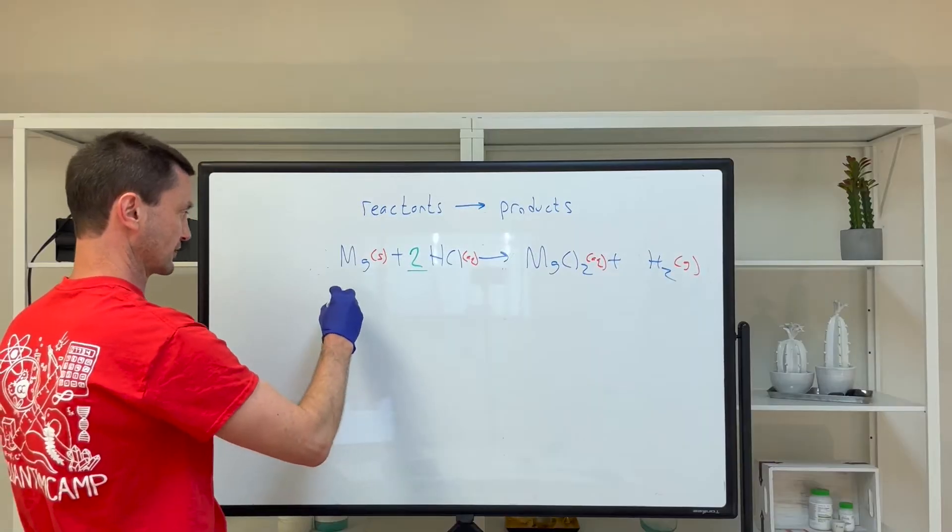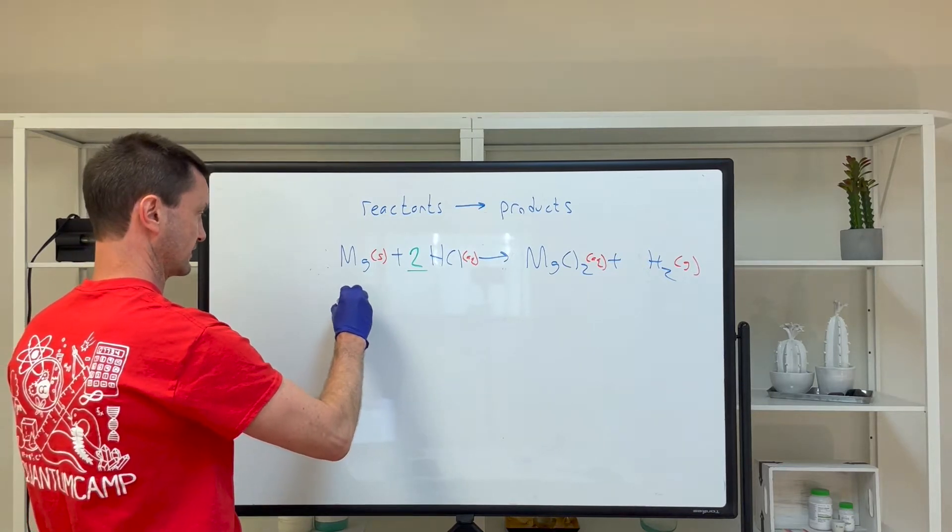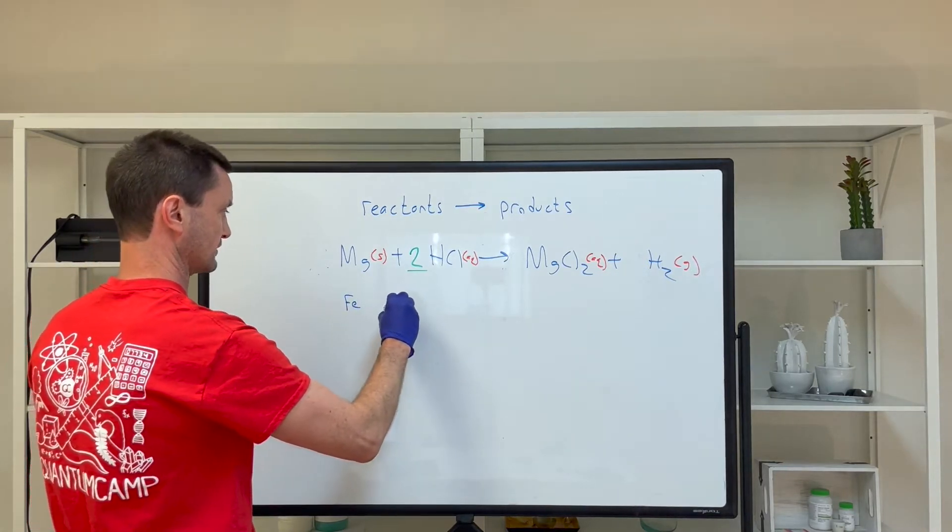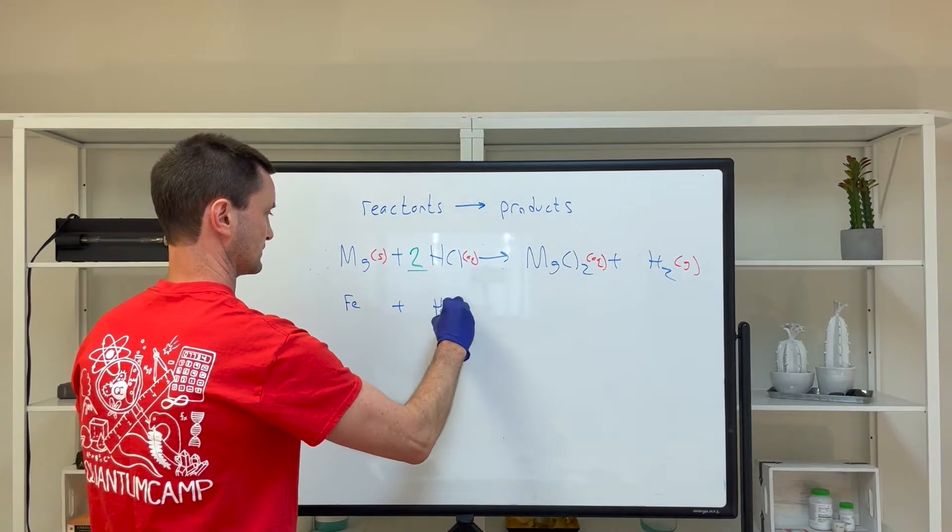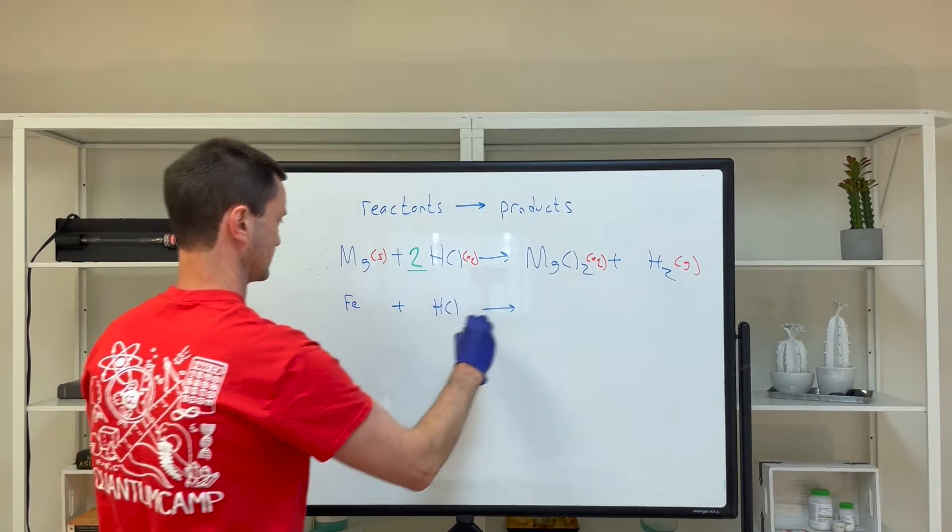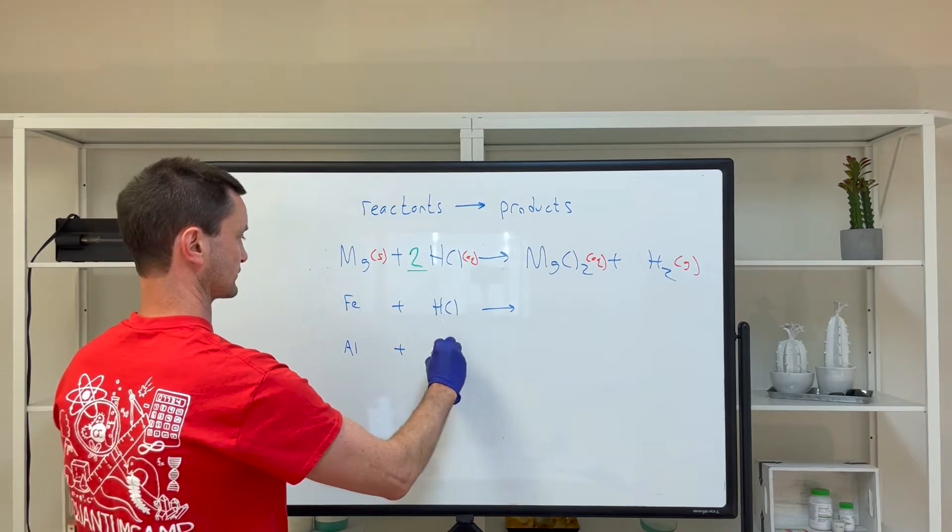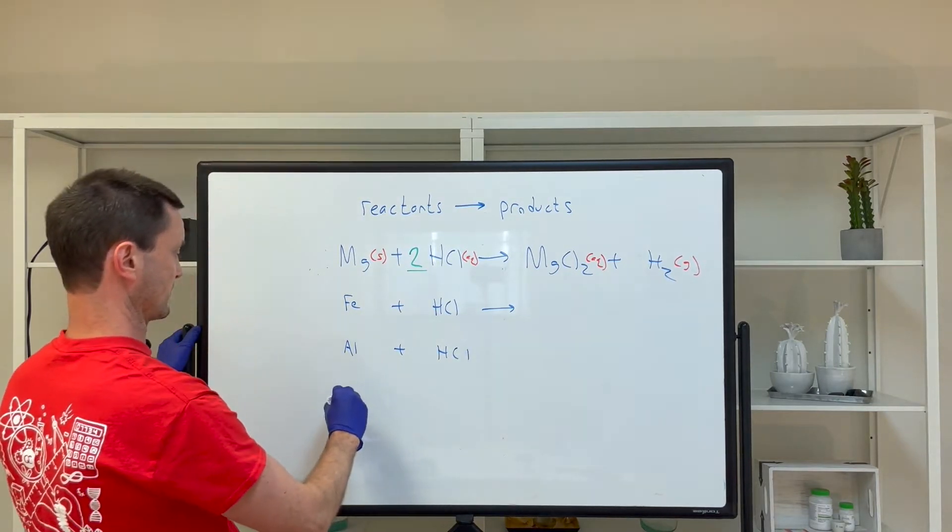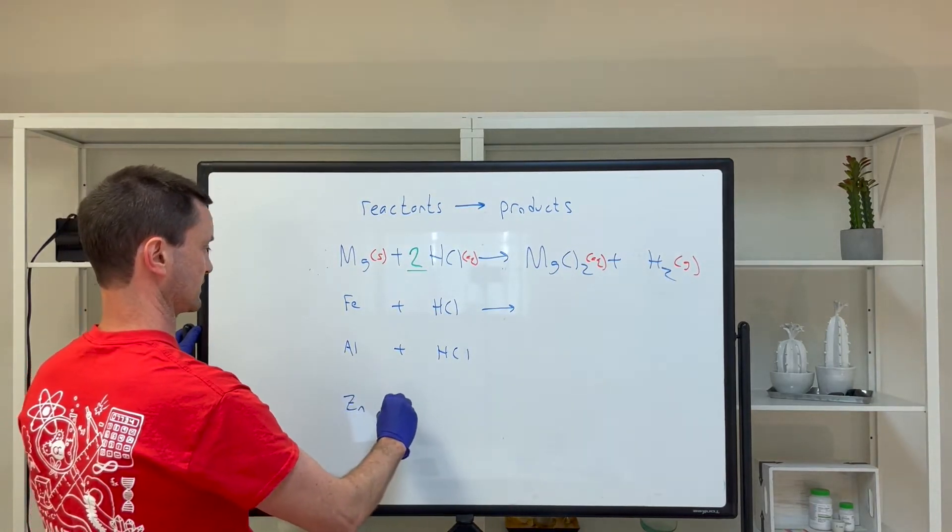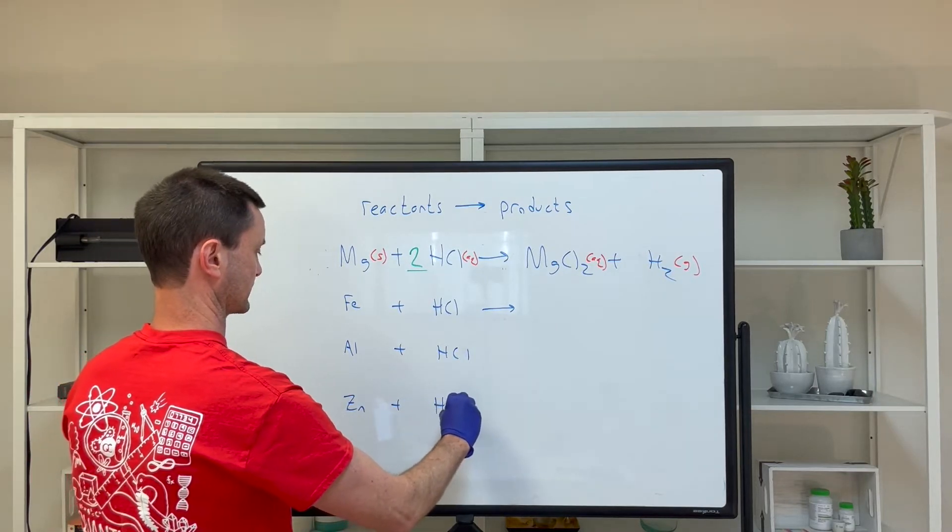Let's write down the reactions for the other three. We have iron plus hydrochloric acid. We have aluminum plus hydrochloric acid. And we have zinc plus hydrochloric acid.